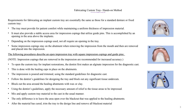When the doctor takes an impression with an open tray, the screw from the impression coping sticks out from the tray. In order to remove the tray from the patient's mouth, the doctor has to unscrew the impression coping and then remove the tray. The following procedures describe an open impression tray with square impression coppings and guide pins.